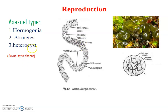The third type involves heterocysts. The main function of heterocysts is nitrogen fixation, but sometimes these cells separate from the filament and convert into reproductive cells. From these cells, a new filament forms. Sexual reproduction is absent in Nostoc.